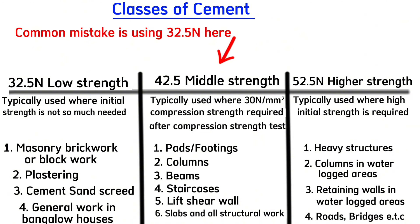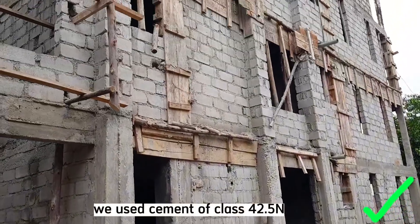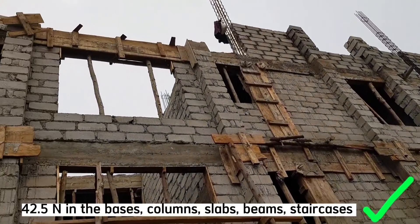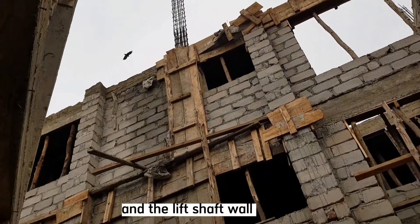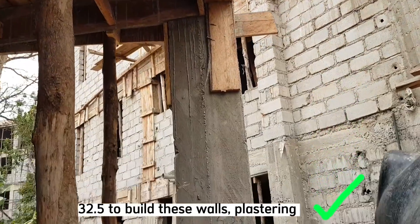The mistake most contractors make is buying any cement they find on the market and ending up using class 32.5 even in beams, columns, slabs, and staircases — which is wrong. On this building, we use cement of class 42.5 in the bases, columns, all slabs, staircases, and the lift shaft wall. Then we use cement of class 32.5 to build the walls, do plastering, and other simple works on site.